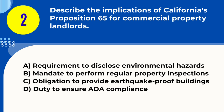Question 2. Describe the implications of California's Proposition 65 for commercial property landlords. A. Requirement to disclose environmental hazards B. Mandate to perform regular property inspections C. Obligation to provide earthquake-proof buildings D. Duty to ensure ADA compliance. Answer: A. Requirement to disclose environmental hazards. Explanation: Proposition 65 in California requires commercial property landlords to disclose the presence of known environmental hazards to tenants.